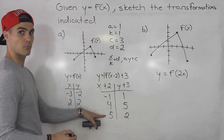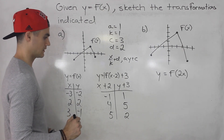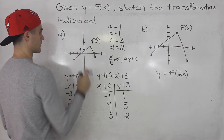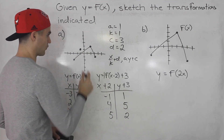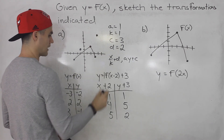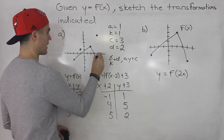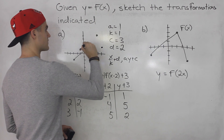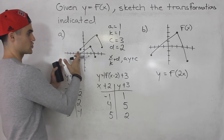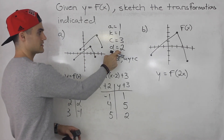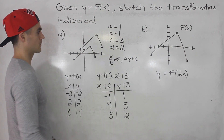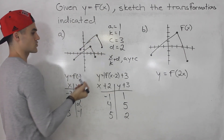Now we have the points for the transformed function and we can just plot those on the same graph. Negative one and one would be over here. Then four and five would be up here. And then five and two would be over here. So this function looks like that. What happened is we basically took this function, shifted it over two to the right — that's the d value of positive two — and then shifted it up by three, which is the positive c value.